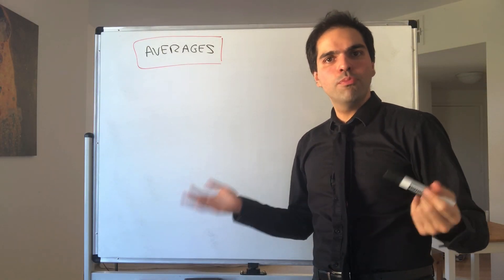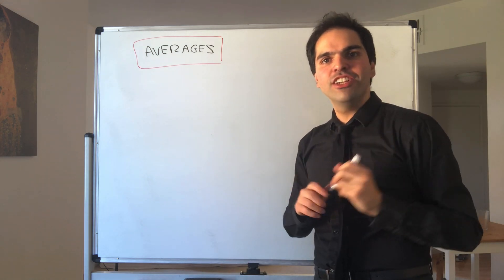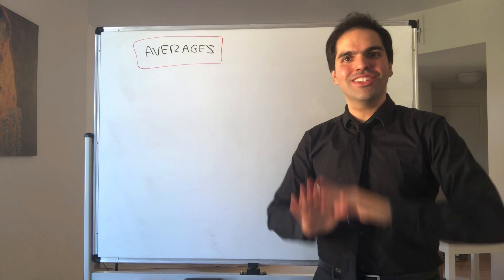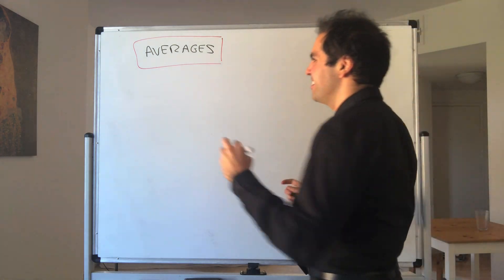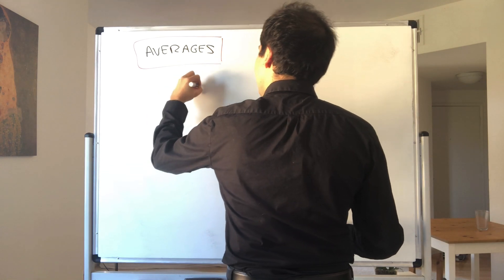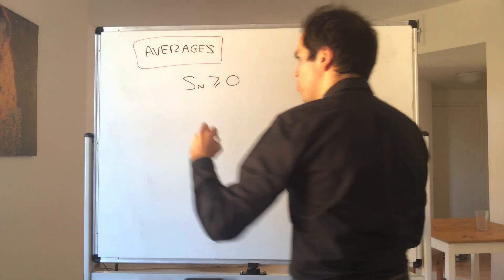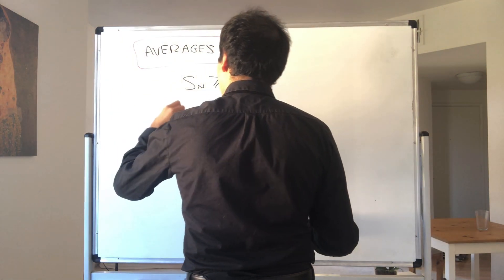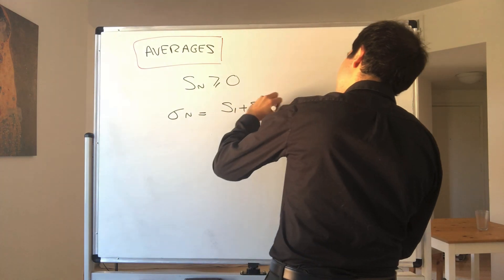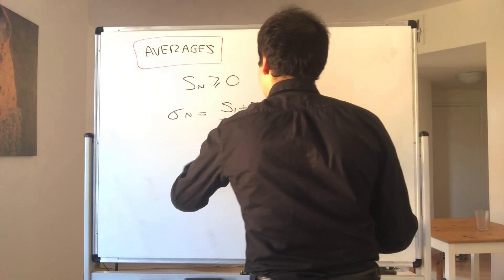Thanks for watching. Today I'm going to prove a very classical result about averages of sequences, which I'm sure has lots of applications. What it says is: if Sn is a sequence of non-negative numbers and you define the average σn to be S1 plus S2 plus ... plus Sn over n,